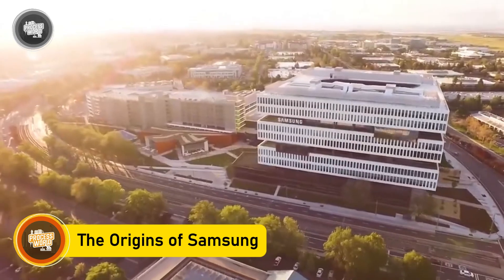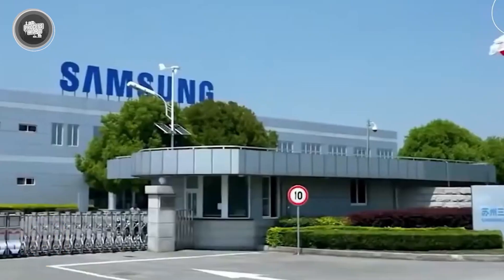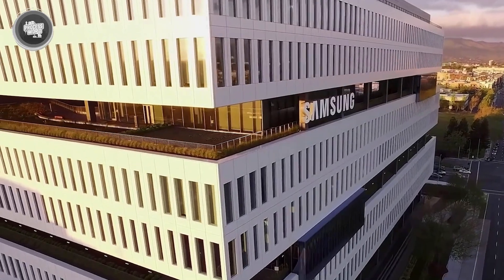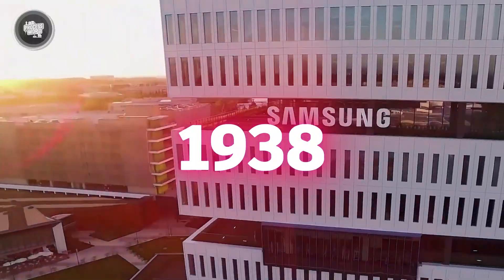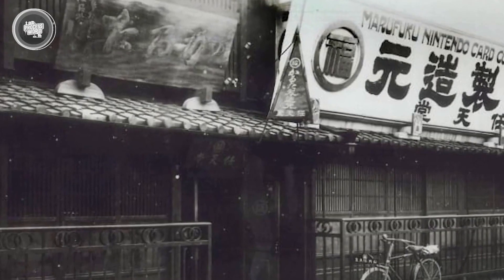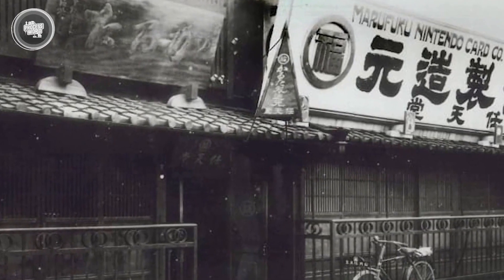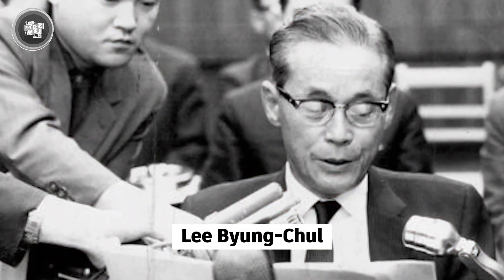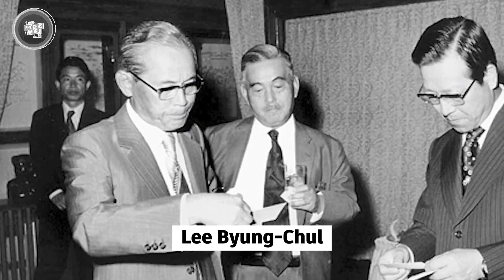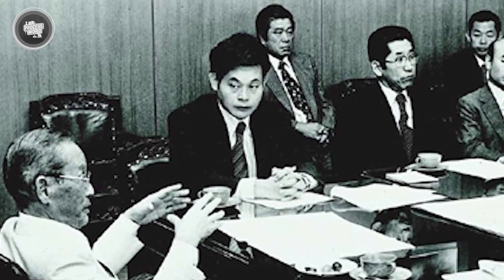The origins of Samsung. Samsung didn't start out with smartphones or semiconductors. In 1938, it was just a trading company in Korea dealing in dried fish, noodles, and groceries. The founder, Lee Byung-chul, probably never thought his small business would become one of the biggest tech giants in the world.